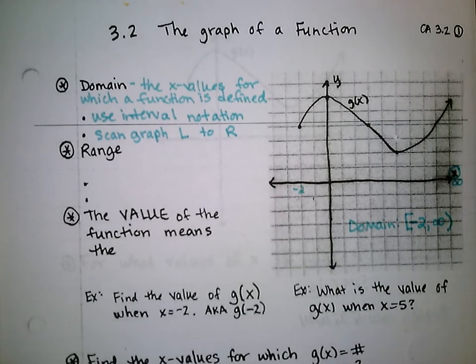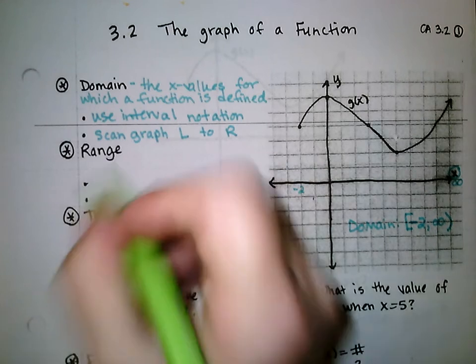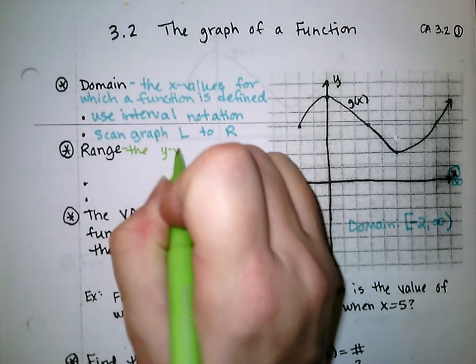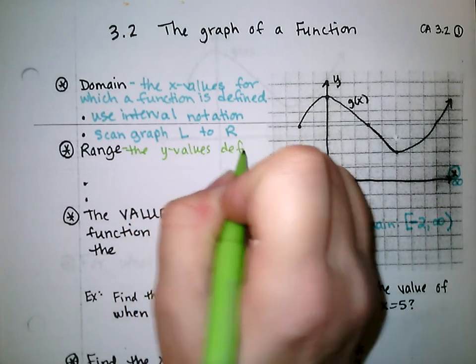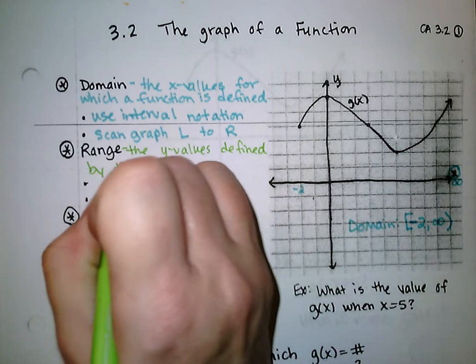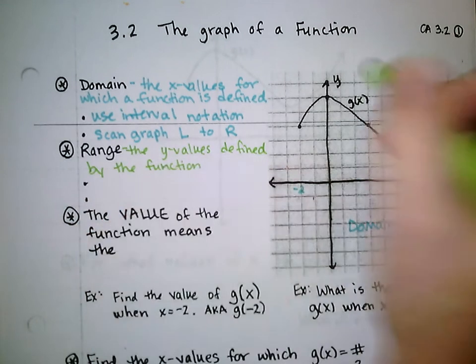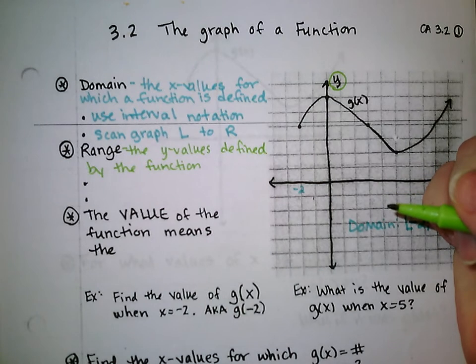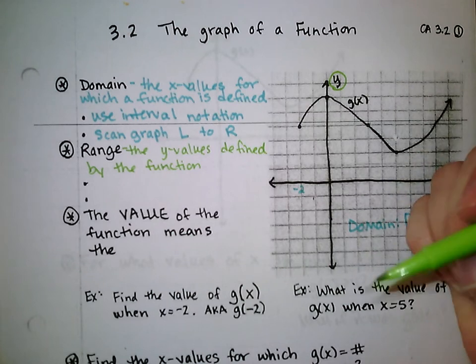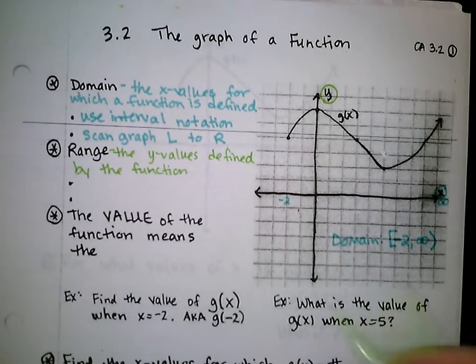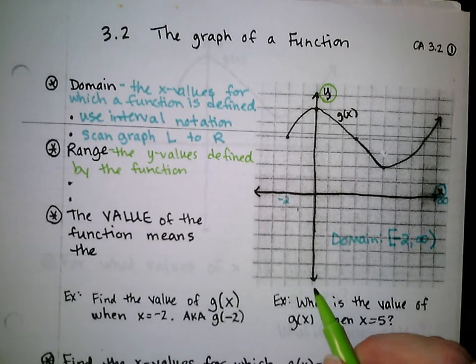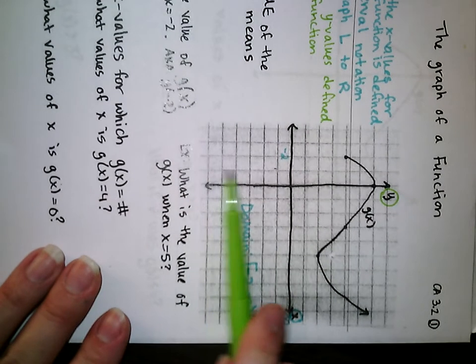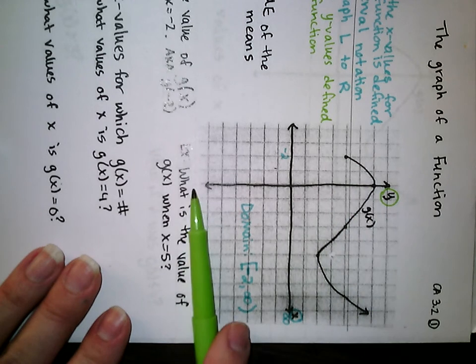Range is going to be the y values defined by the function. The range is kind of like scanning the graph up and down instead of left and right like the domain was. If you think about the negative end of your y axis at the bottom and the positive end at the top, it's like turning your graph and scanning it left to right — what we're really doing is scanning the graph from bottom to top.